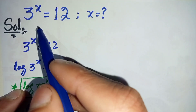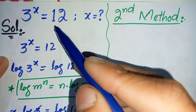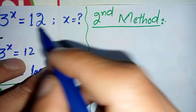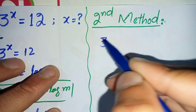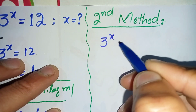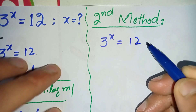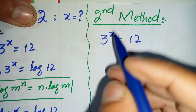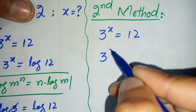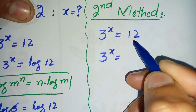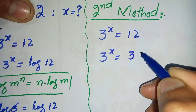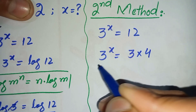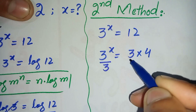Now I will try to solve this math problem using the second method. We rewrite the question: 3 raised to power x is equal to 12. In this second method, first we factorize the right hand side, so 3 raised to power x is equal to 3 times 4. Now we divide both sides by 3.